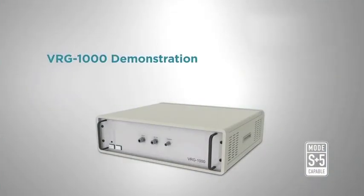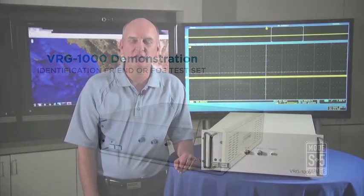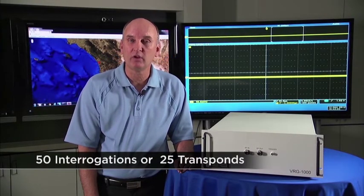The VRG1000 is a Mark 12a IFF test set used to test IFF radios or platforms containing IFF radios. What makes our product unique is that we don't generate just a single interrogation or a single transponder, we can generate up to 50 interrogations or 25 transponders.